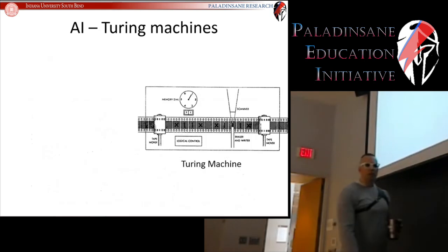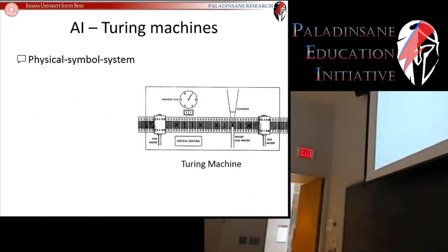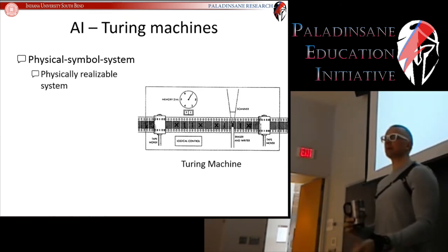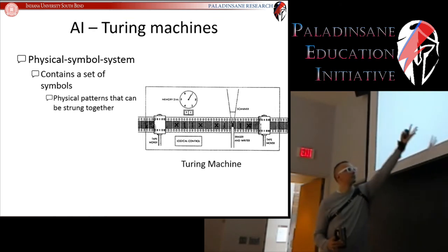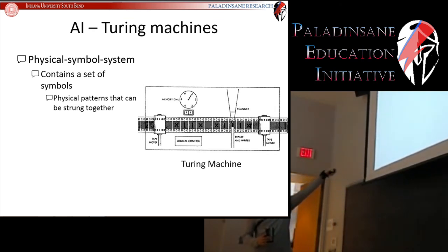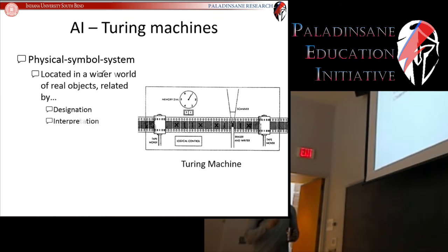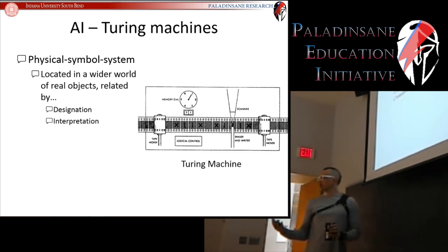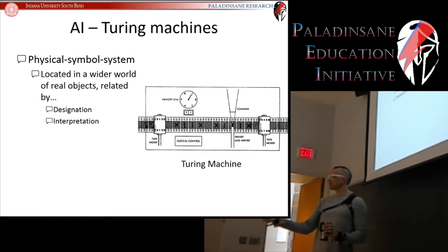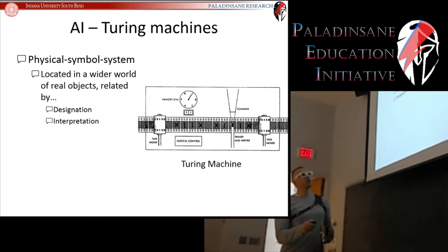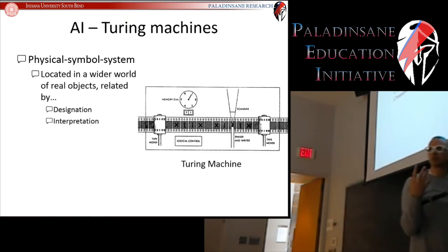Why is this so important? First, it's a physical symbol system — physically realizable, with a set of symbols that can be strung together, processes that operate on those symbols (scanning, writing, erasing, changing state), and it's located in the wider world by designation and interpretation. If you know how to read these symbols — almost like reading Morse code or Braille — you can designate things into the machine and then interpret what comes out.